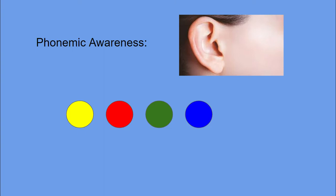Say pair. Now say pair, but don't say p. Your word is air.